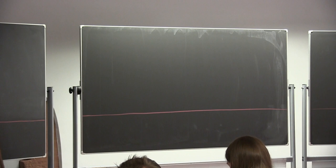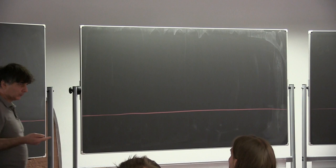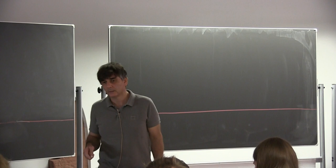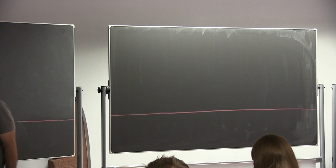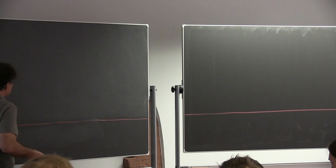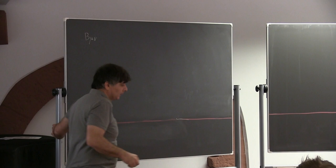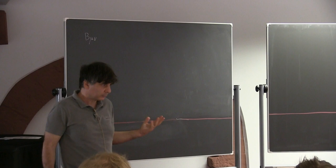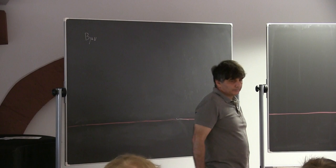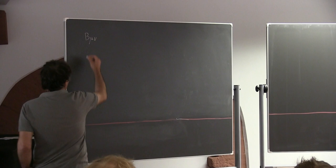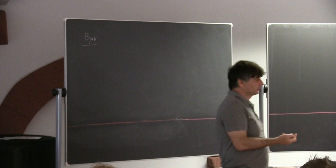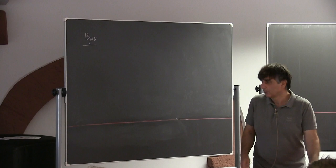Let's continue with the discussion that we had yesterday. I'm going to move to the next example of gauge redundancy. One example of a very interesting field that exhibits gauge redundancy is an anti-symmetric field with two anti-symmetric indices — a two-form. This is a generalization of Maxwell. Maxwell was a one-form and now we are generalizing it with two indices, so it's a two-form.